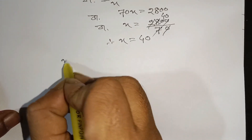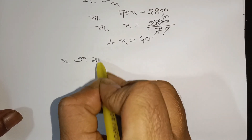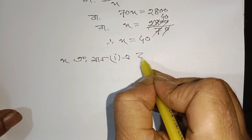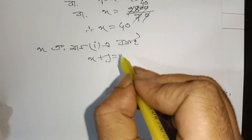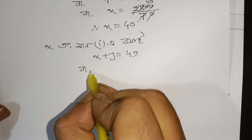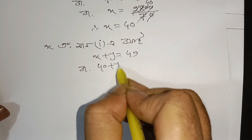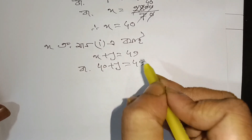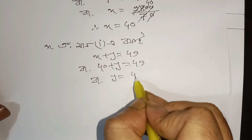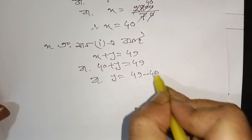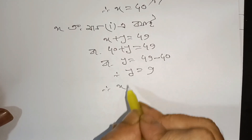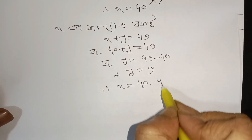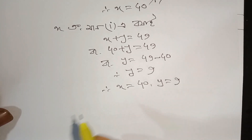X has been taken, so x plus y is 49. So y will be taken, so x will be taken — 40 plus y is 49. And y will be taken: 49 minus 40. So y is 9. This is a good answer: x is 40 and y is 9.